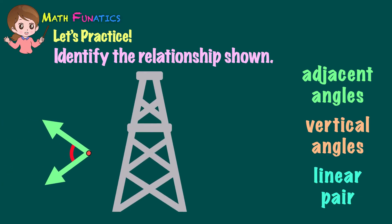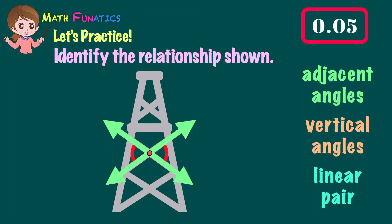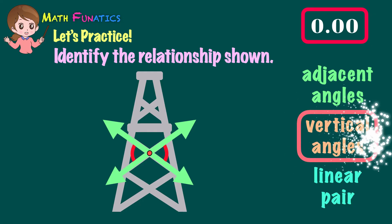Here's the first question: What is the relationship shown by the angles of the tower? I am giving you five seconds to think. What's your answer? That's right — they're vertical angles.